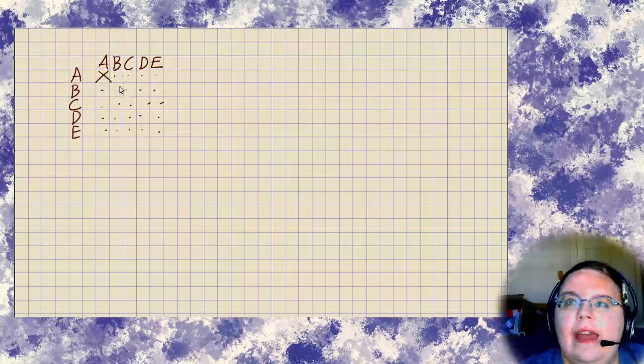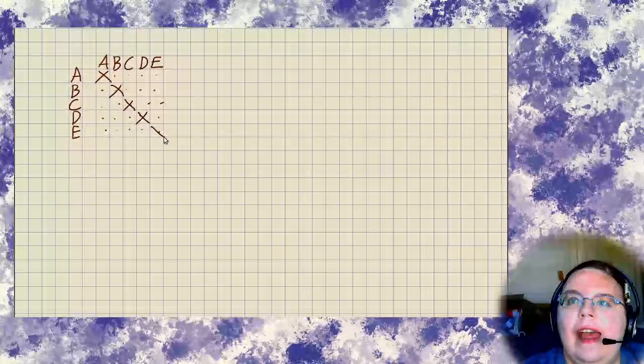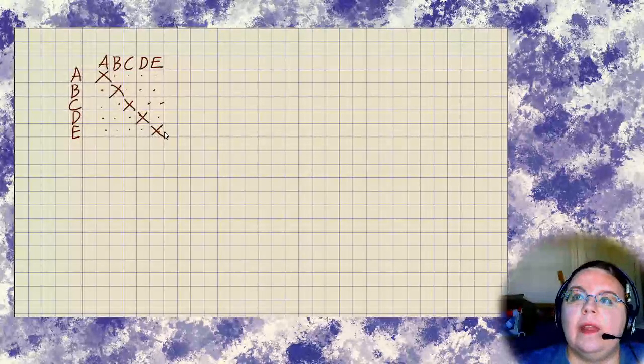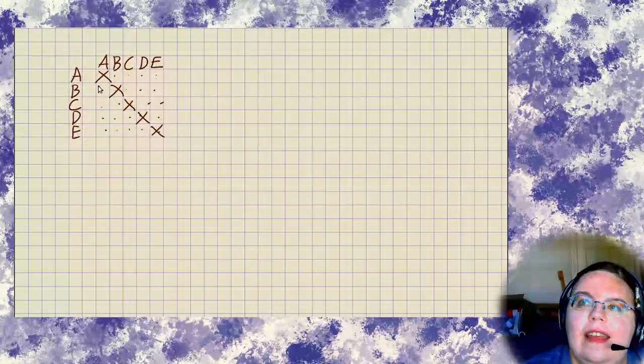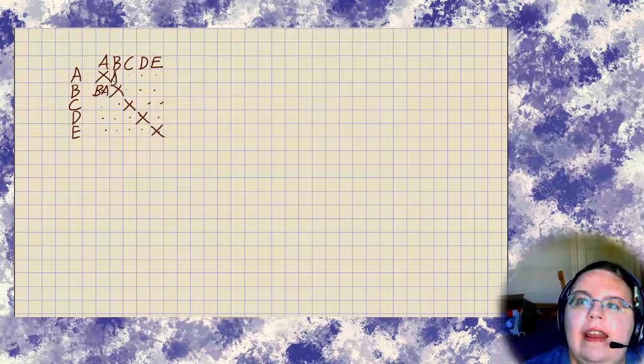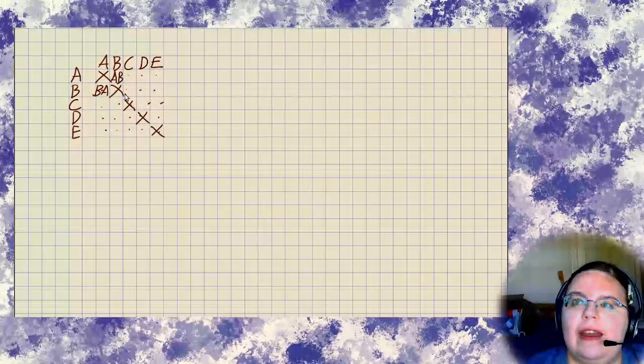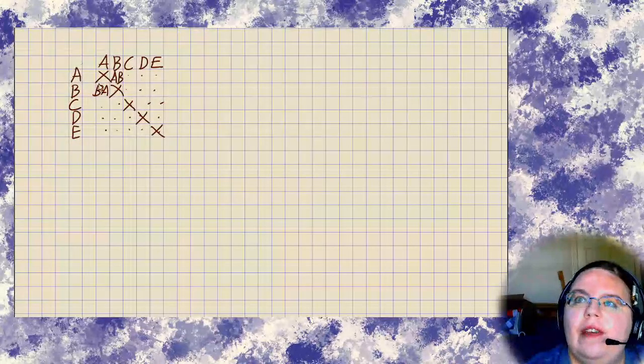So that's not a bad idea for a start, but let me point something out about this. Anna doesn't need to shake hands with Anna, nor Betty with Betty, etc. So the five on the diagonal would not actually happen. Furthermore, there are some redundancies in this. So if Betty shakes hands with Anna, Anna doesn't separately shake hands with Betty. So really, we need to modify our strategy a bit.